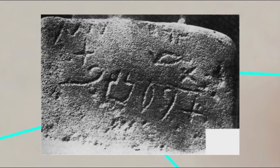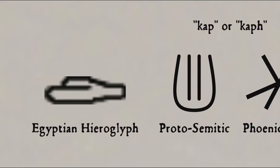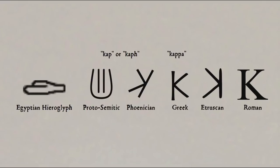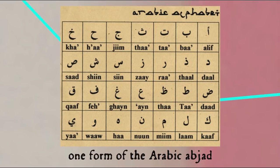Around 2000 BCE, a Semitic group in Egypt borrowed from the Egyptians the idea of using pictures to represent individual consonant sounds. They borrowed the pictures from the hieroglyphs, such as a hand, but ignored the Egyptian word they represented, substituting their own Semitic word for hand — in this case calf — and used that character to represent the consonant at the beginning of that word, in this case the k sound, and that hand character eventually became our letter k. Now at this point there were only letters for the consonants, which is why the Semitic alphabet is sometimes referred to as an abjad, an acronym made from the names of the first four letters of the Arabic alphabet, rather than a full alphabet with consonants and vowels.